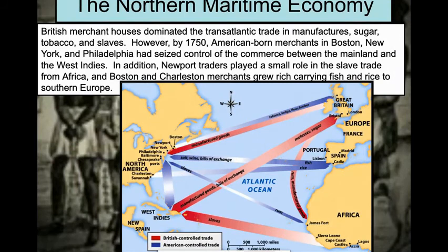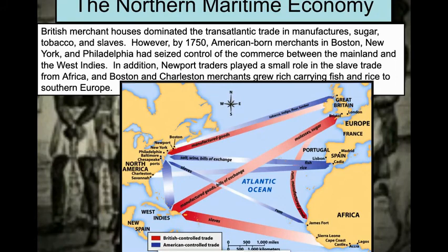Looking at the economy: manufactured goods are coming from Britain to the colonies, while raw goods — tobacco, indigo, flour, lumber, fish, and rice — are going from the colonies back to Britain. The colonies get raw goods, ship them to the mother country, which creates the final goods and ships them back to be purchased.